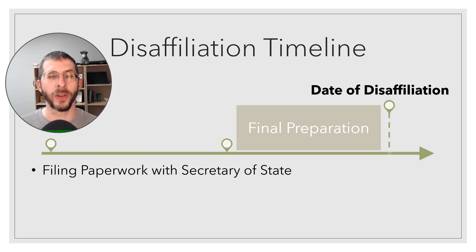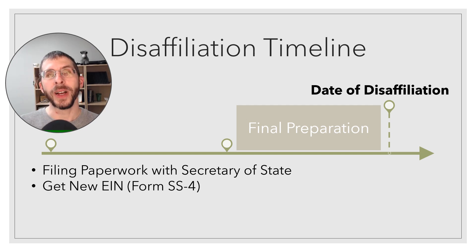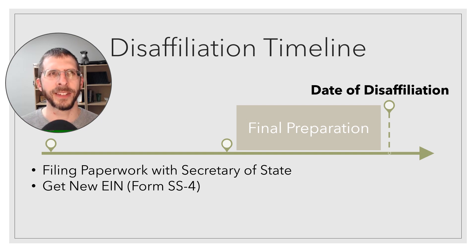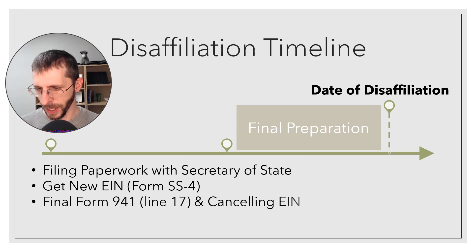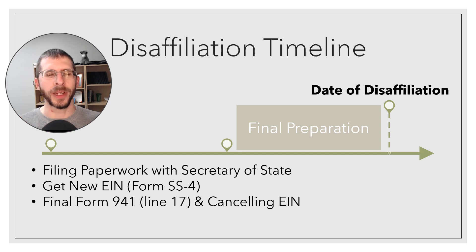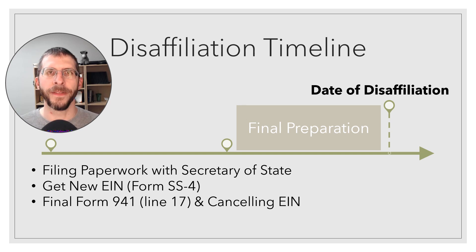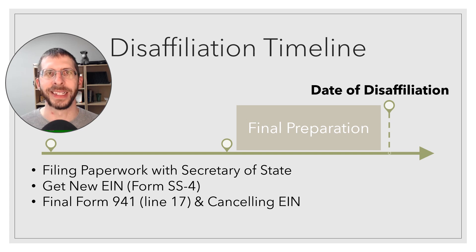You'll also need to get a new tax ID — a new EIN. I'll link to that; it's form SS-4, but most of the time you just do it online and it's pretty much automatic. This is important for payroll purposes. Also worth knowing: churches are automatically considered a 501(c)(3) by the IRS for charitable tax purposes, so you don't need to separately apply. I'll put a link to that since it's so commonly misunderstood.